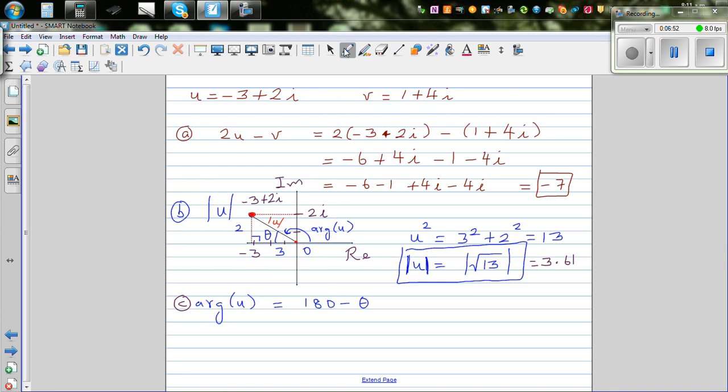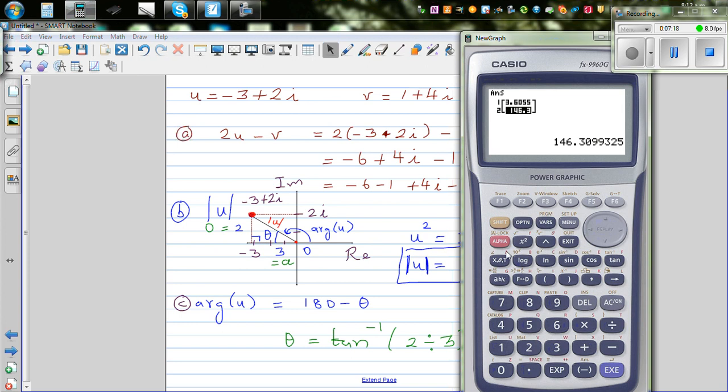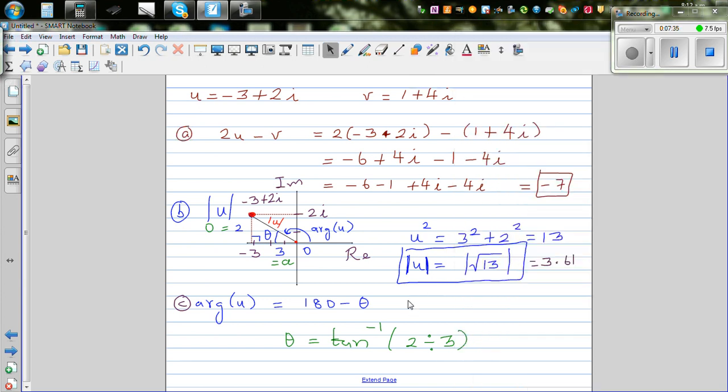Using SOHCAHTOA, this is your opposite and this is your adjacent. Using SOHCAHTOA, theta is tan inverse of opposite over adjacent, which is 2 divided by 3. That would be... Let me calculate: shift tan, 2 divide by 3, close bracket. 33.69 degrees.